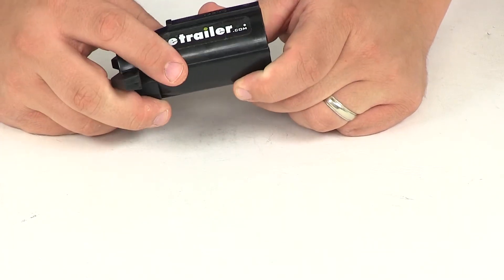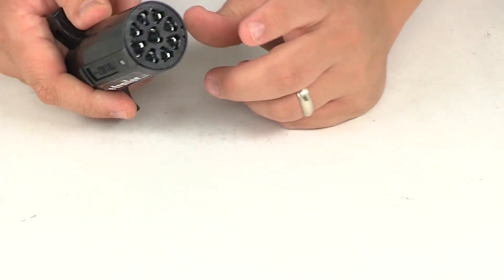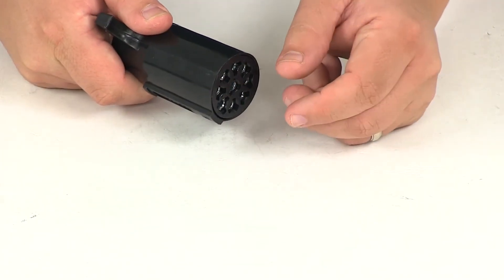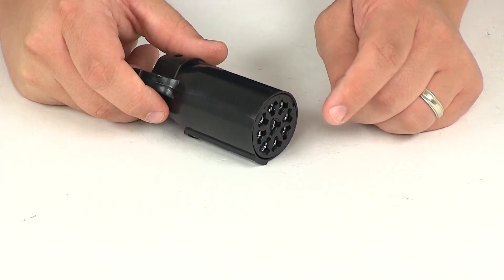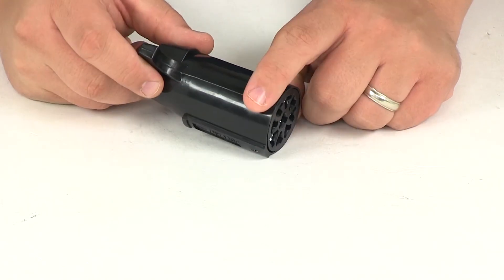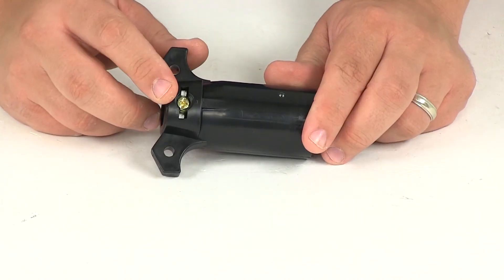You'll need to undo the set screws, which allows this portion here to come out of the housing. Bring your wires through, make your connections to the back of this point here, reinsert it, reset the screws, and then tighten up the retainer screw here at the back.